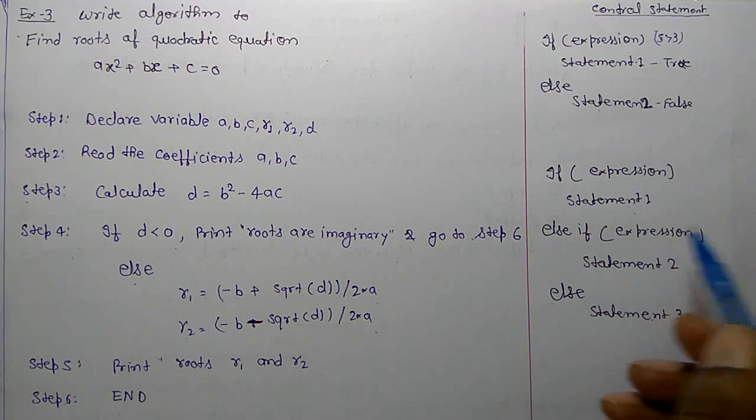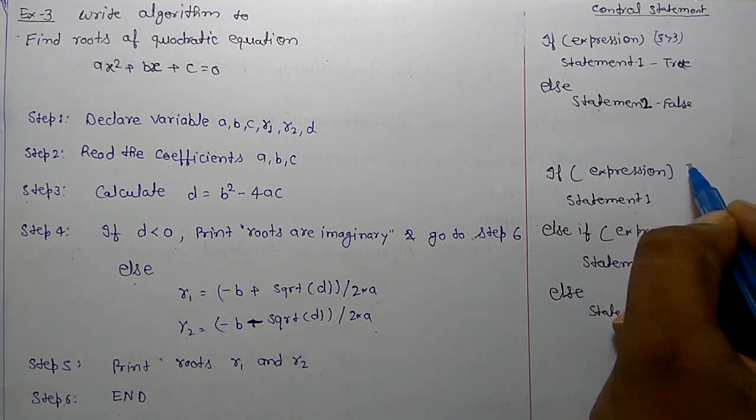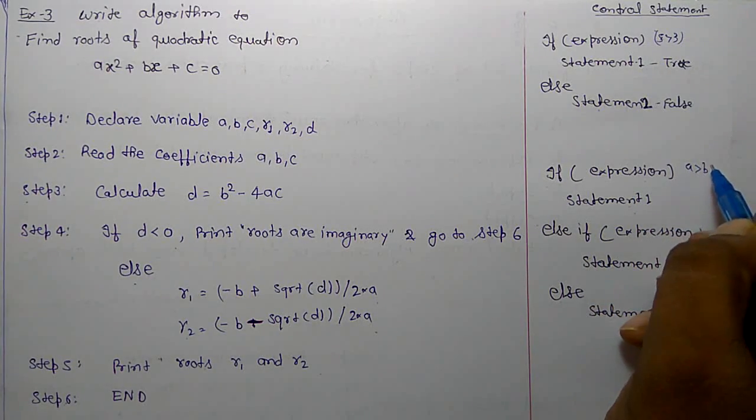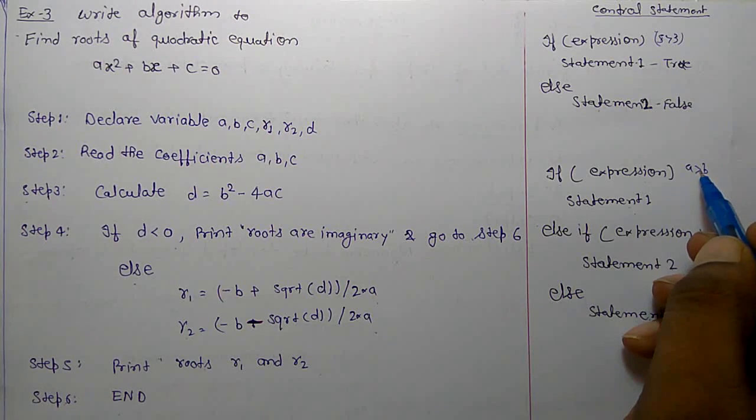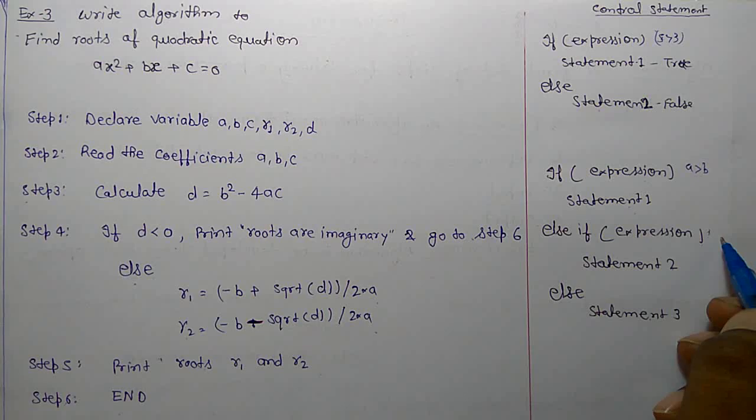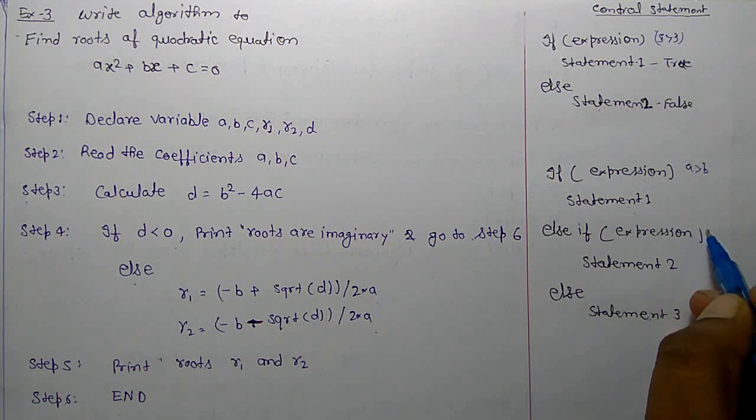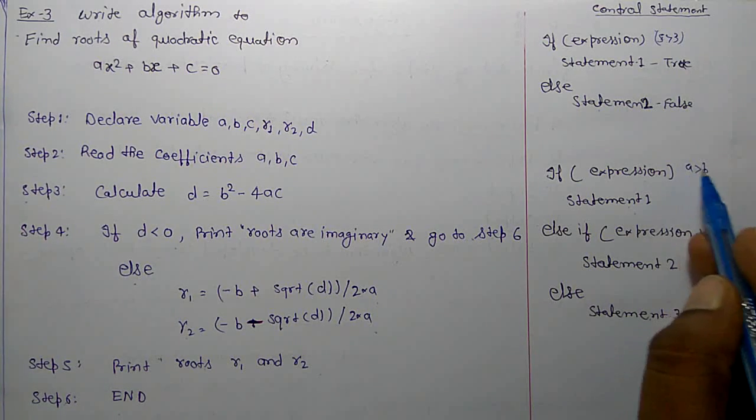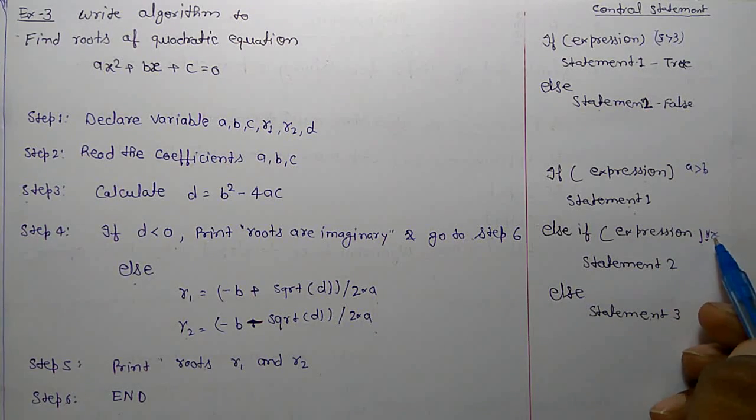For example, finding greater value among A, B, C. So first you check A is greater than B. And next you may check B is greater than C. If A is greater than B is false, it means B is greater. Next statement: B is greater than C is true, then statement 2 will give you greater value.